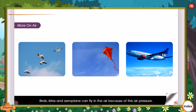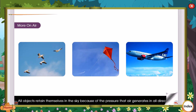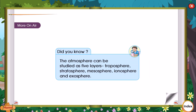Wind also generates pressure. Birds, kites and aeroplanes can fly in the air because of air pressure. All objects remain in the sky because of the pressure that air generates in all directions. The atmosphere can be studied as five layers: troposphere, stratosphere, mesosphere, ionosphere and exosphere.